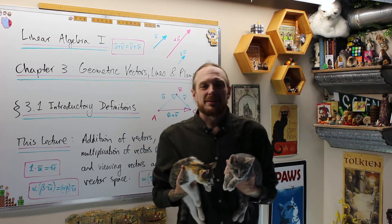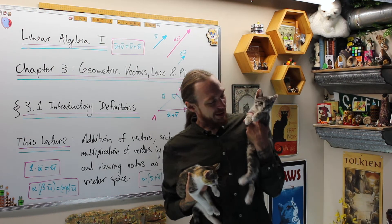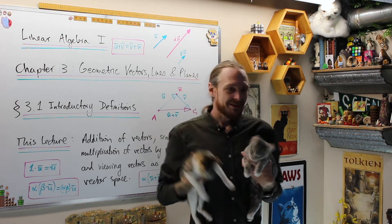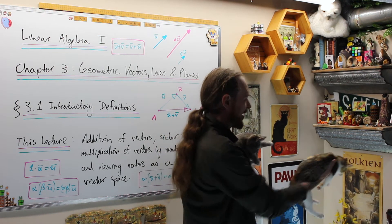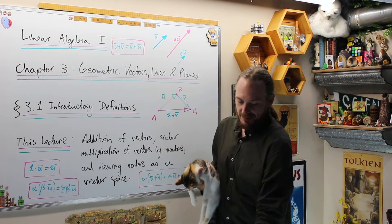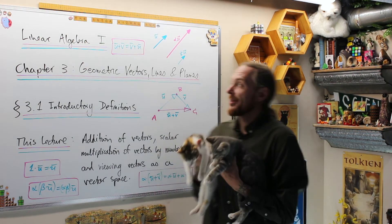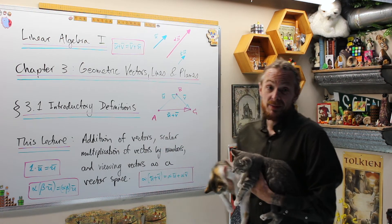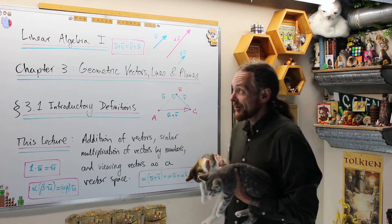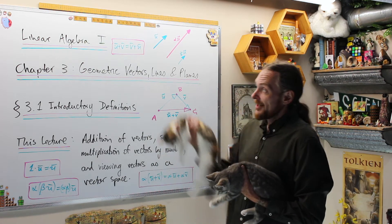All right, welcome back. This is the Tudor Wizard. I'm Adrian. This is Ringo. This is Alice. Please subscribe right here. Hit the notification bell over there. You'll get notifications for this one and a bunch of others on our channel.